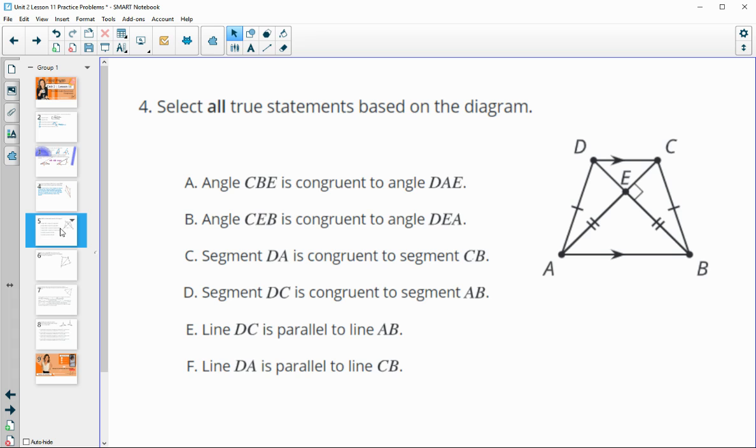Number four, select all true statements based on the diagram. Angle CBE, so CBE is this angle, is congruent to DAE. And that is going to be true because we would see that these two triangles are congruent over here, and so then those two angles would be congruent. So that's true.